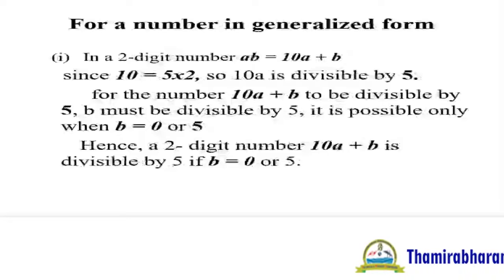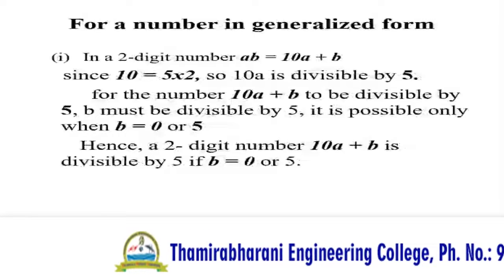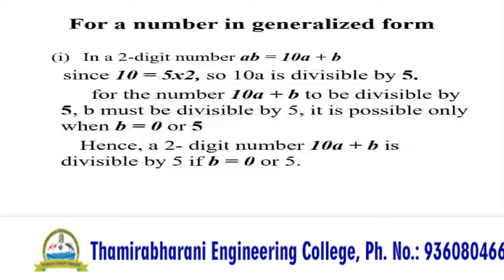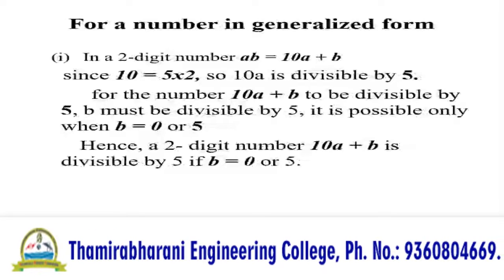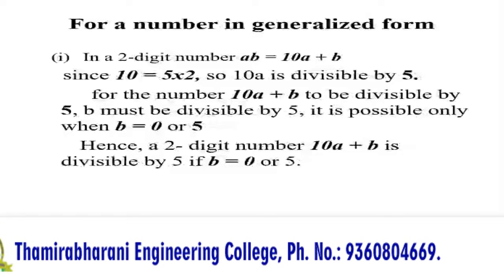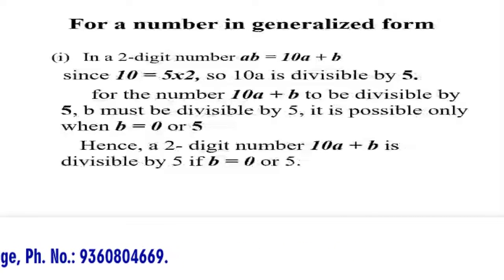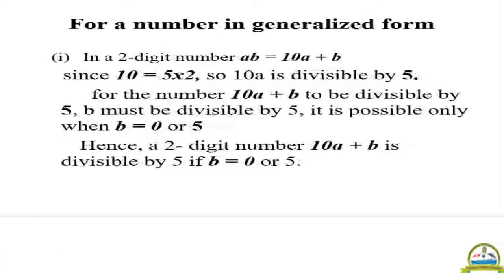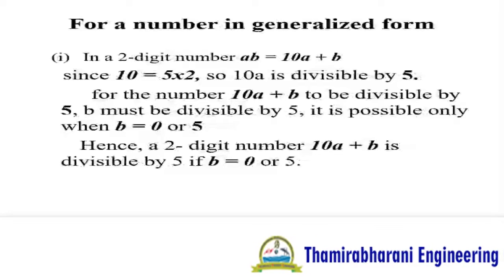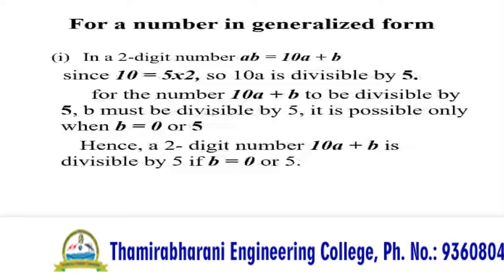For a number in generalized form: a two-digit number AB equals 10A plus B. Since 10 equals 5 times 2, so 10A is divisible by 5. For the number 10A plus B to be divisible by 5, B must be divisible by 5, which is only possible when B equals 0 or 5.